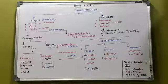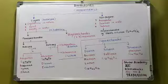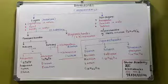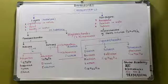Keto hexose: the example is fructose. Fructose is a keto hexose, meaning the functional group is ketone and the number of carbon atoms is 6.